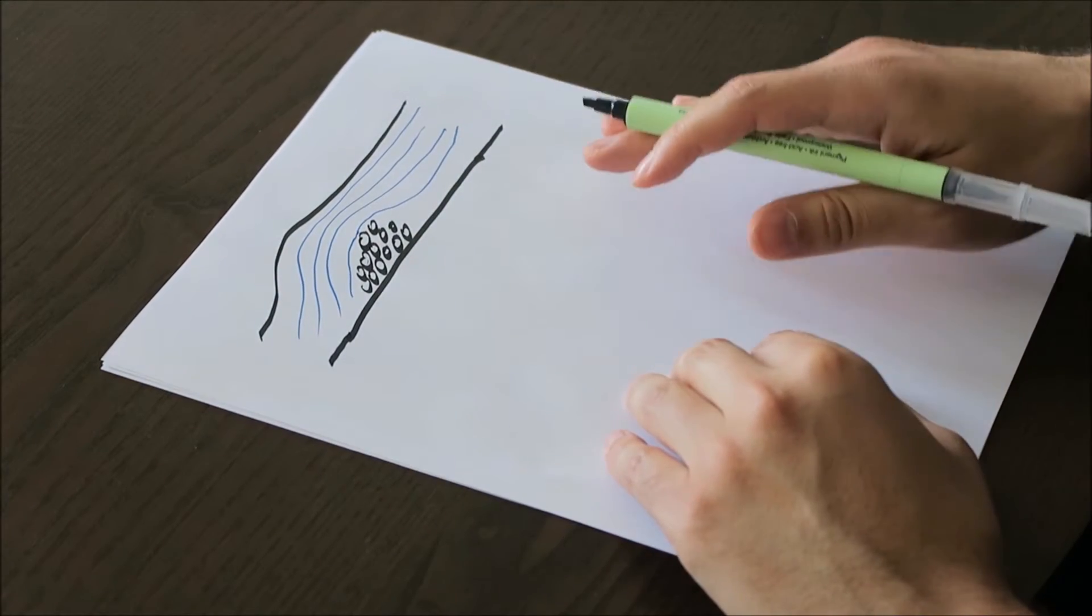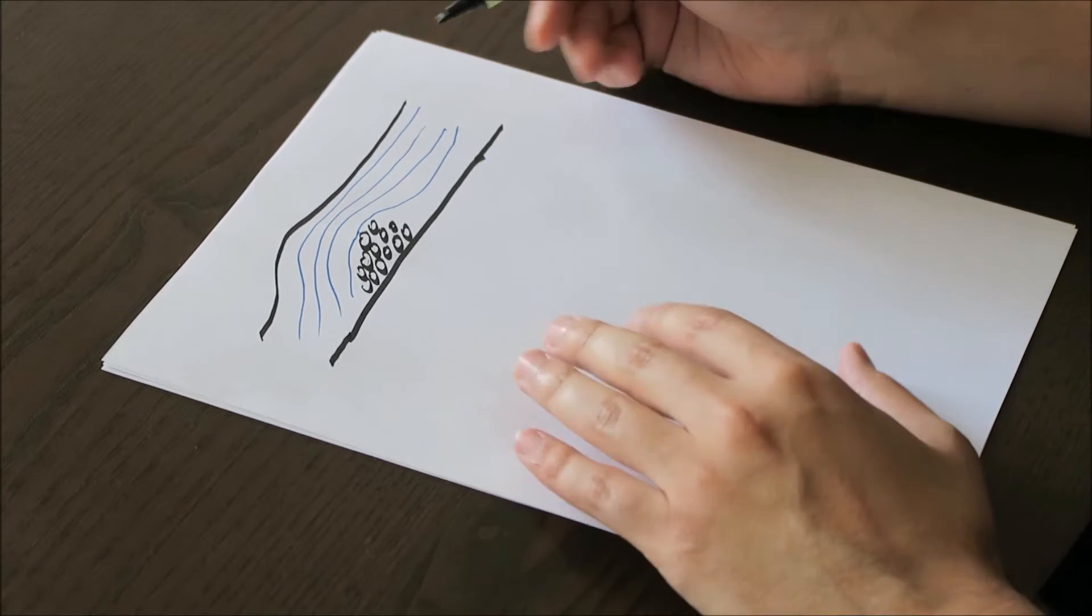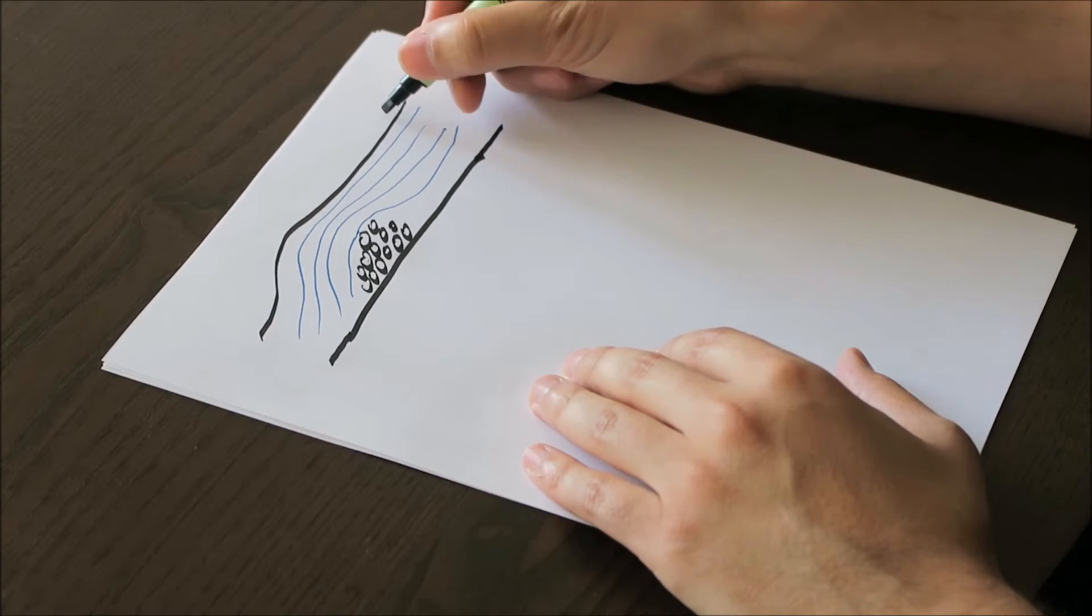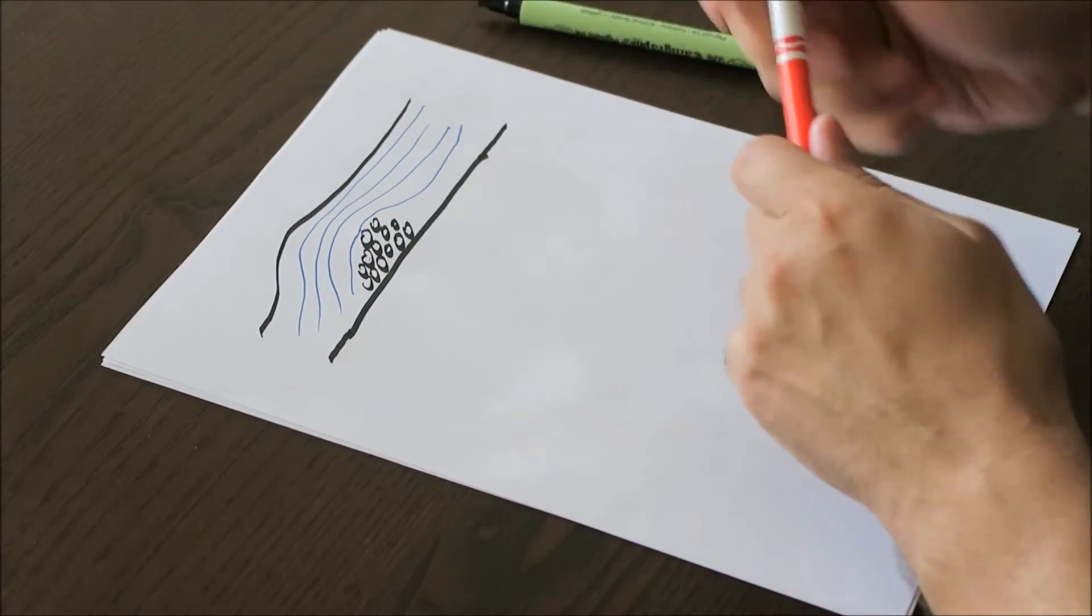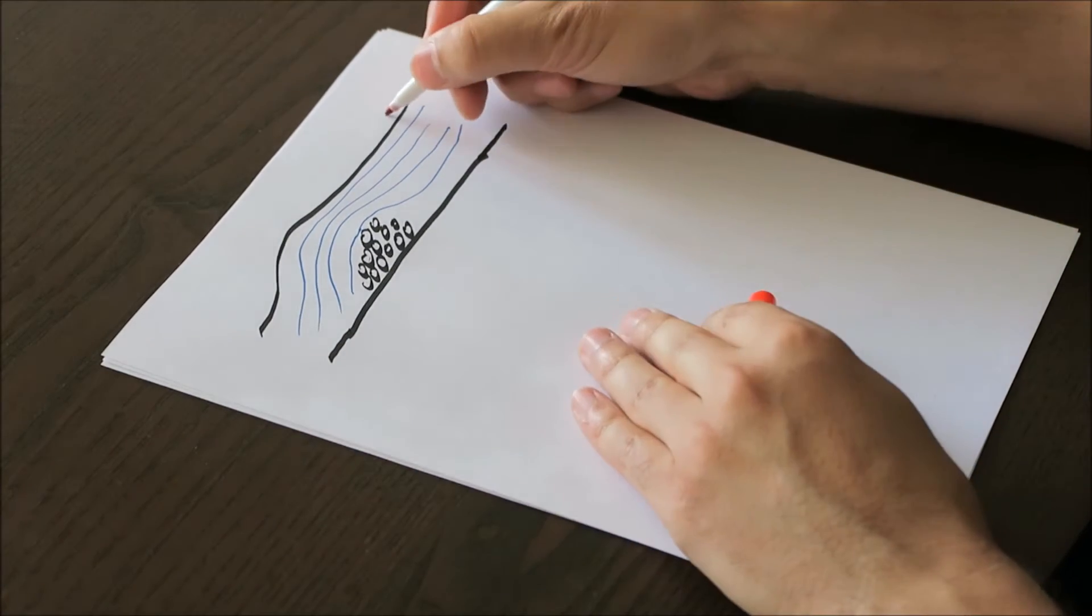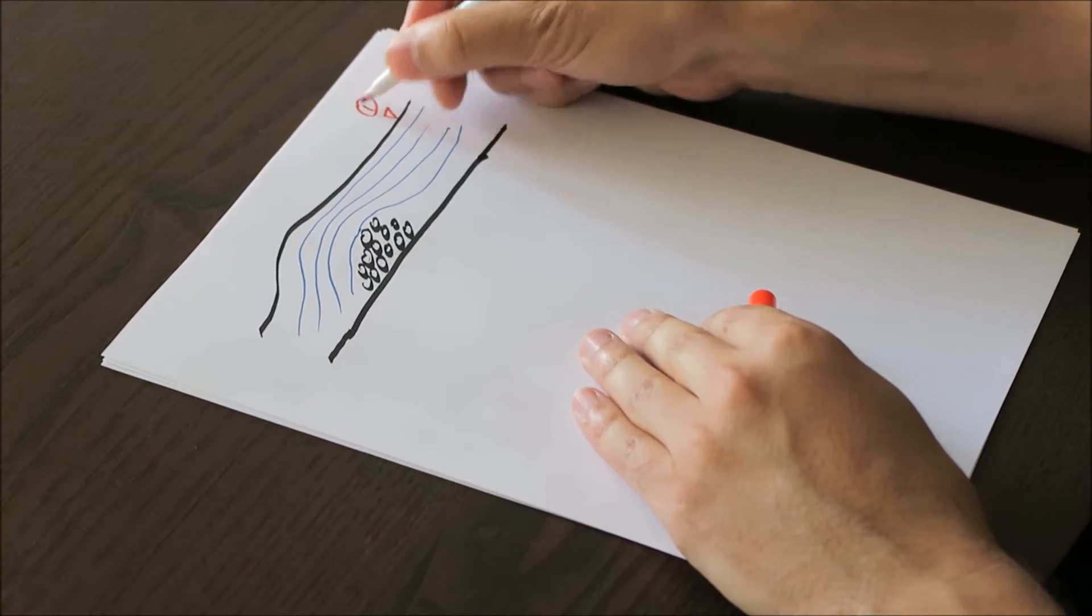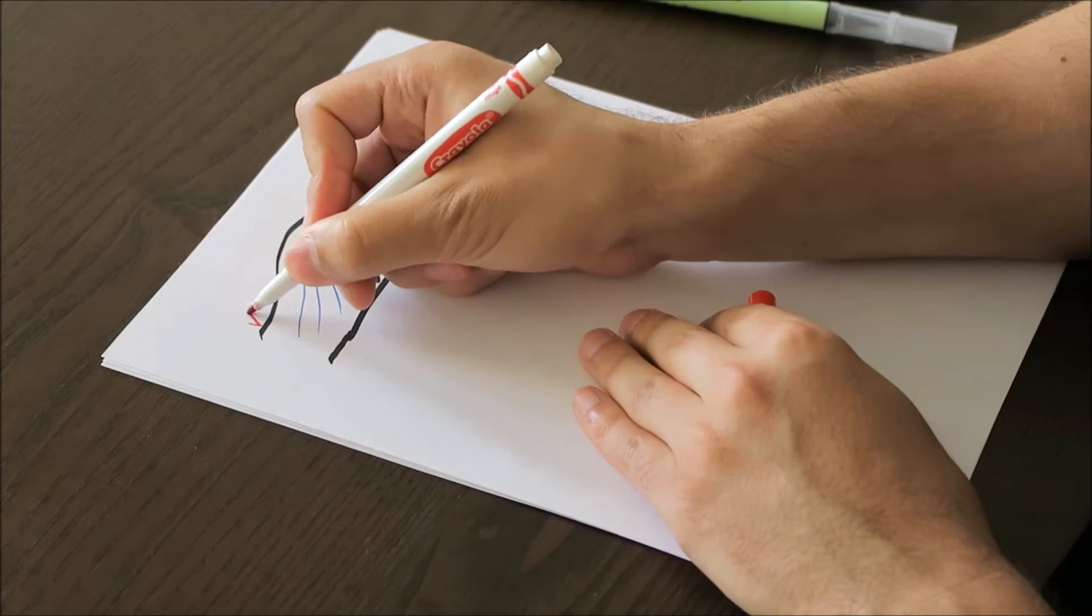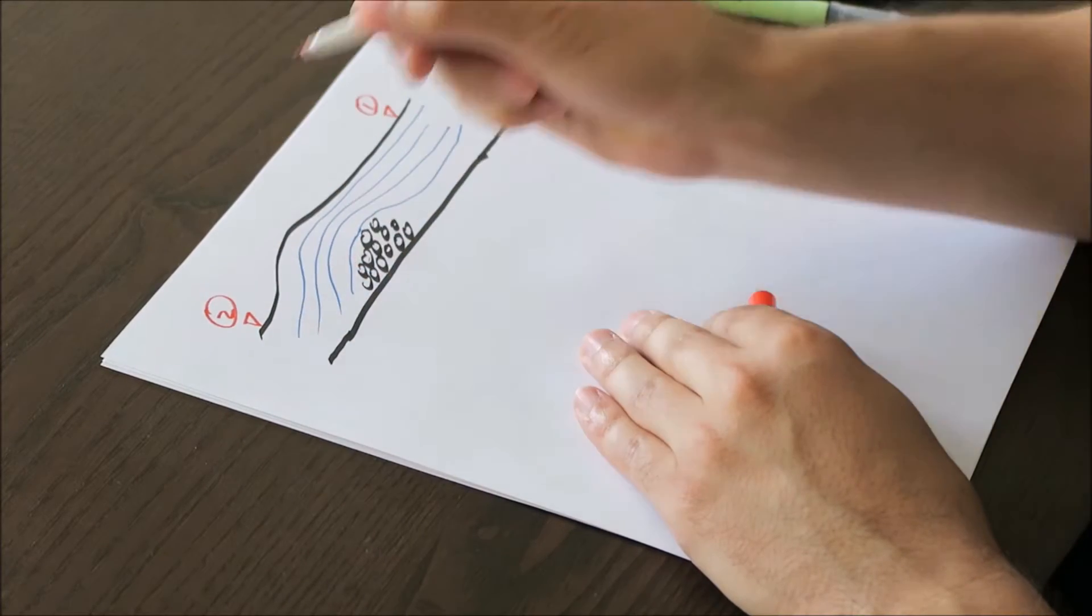So to do that, we're going to look at Bernoulli's equation, and to start off with Bernoulli's equation, we're just going to define some points and put in some numbers. We'll start with making this our first point, and at the bottom, after we flow over these rocks, we'll have this be our second area.